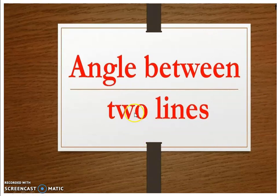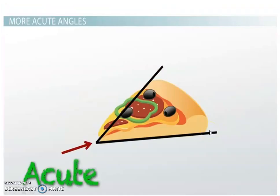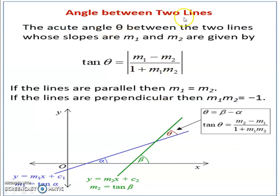Looking at the diagram showing the angle between two lines: for slope calculations, we need the acute angle in inclination format. The formula for the acute angle theta between two lines with slopes M1 and M2 is: tan theta equals M1 minus M2 over 1 plus M1 times M2. If the lines are parallel, M1 equals M2; if perpendicular, M1 times M2 equals minus 1.